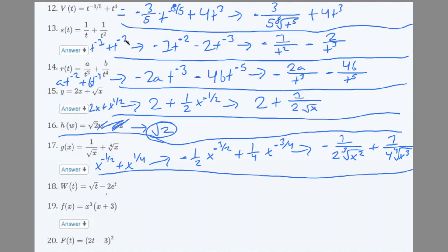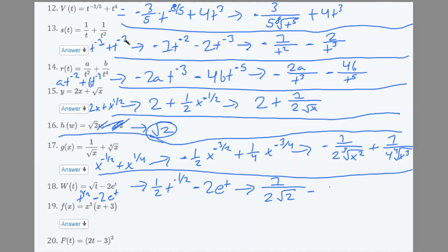Number 18: √t − 2e^t. Rewrite as t^(1/2) − 2e^t. Derivative: (1/2)t^(−1/2) − 2e^t. Rewriting: 1/(2√t) − 2e^t.